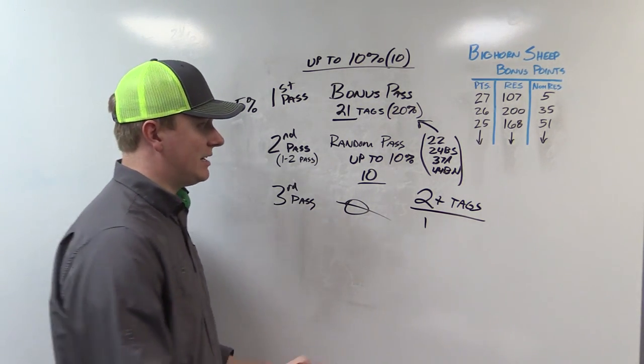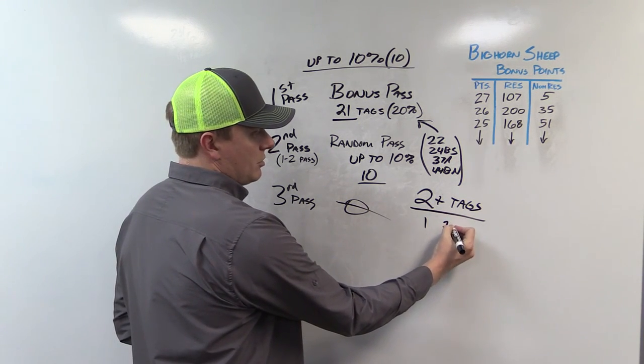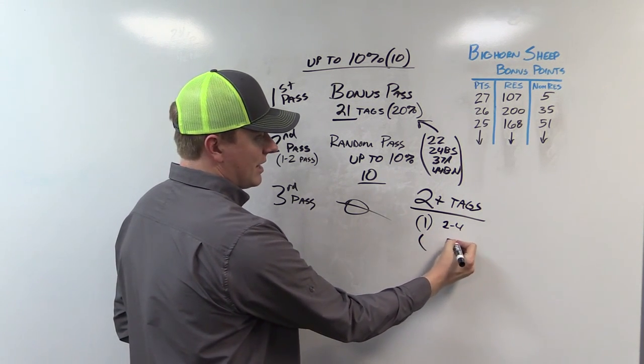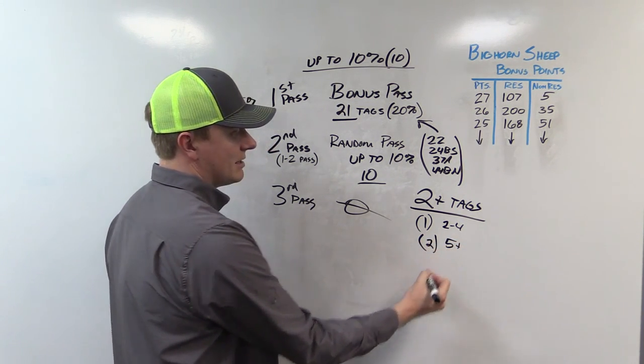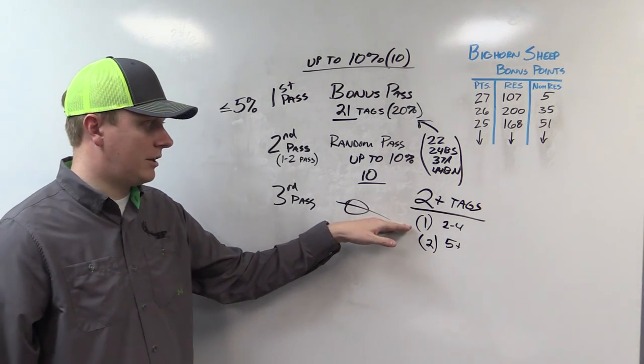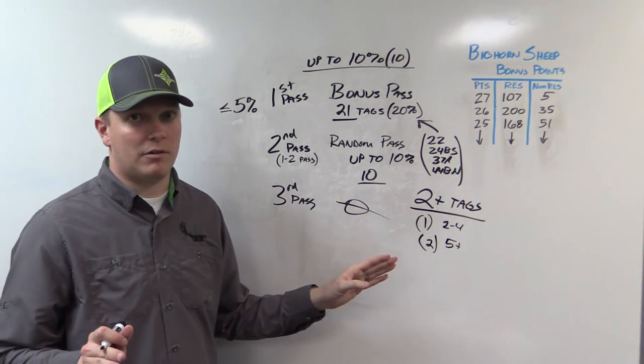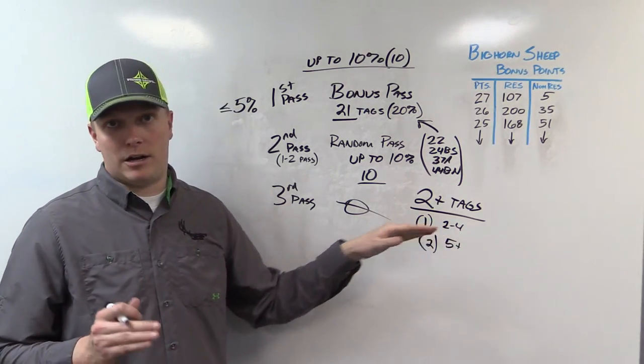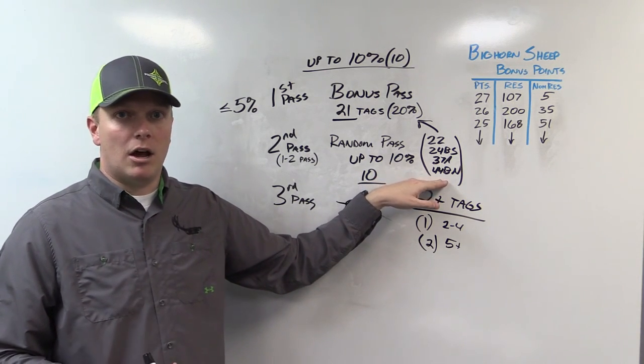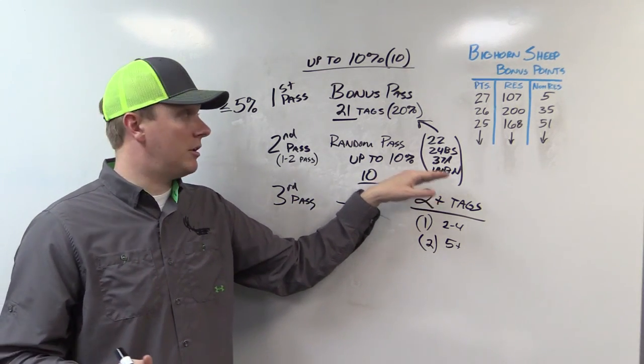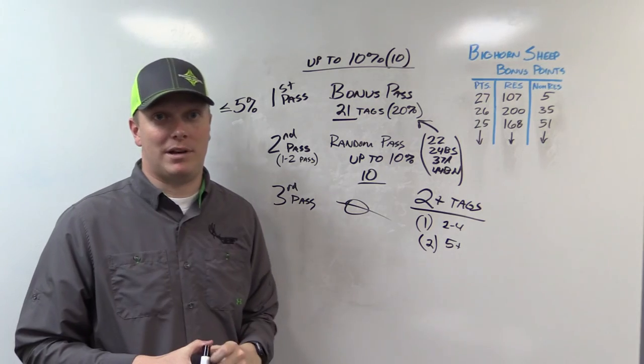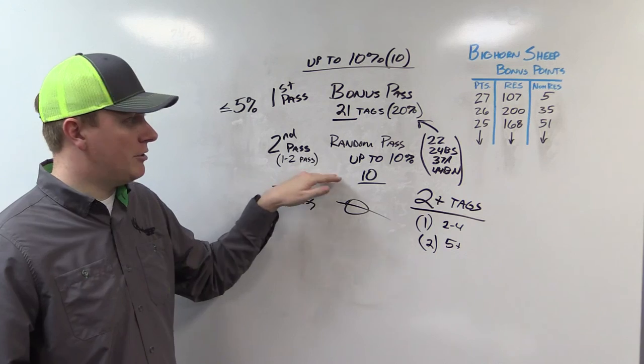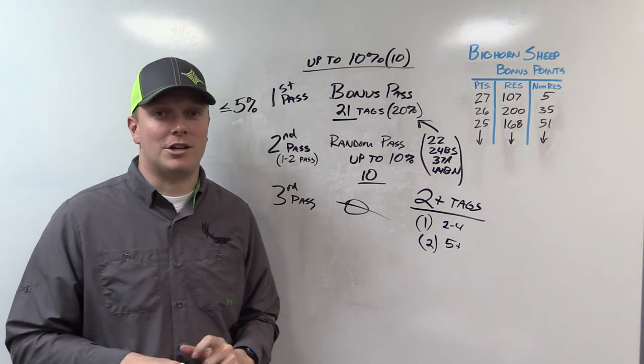We can only take one tag if there's two to four tags total. We can only have one. If there's five plus tags available we can have two tags. That's it. So don't look at the units that only have one tag available. You won't see them covered in our magazine. We only cover hunts that have a chance at a non-resident tag. Don't choose the units that are taken by your max point holders unless you happen to have maximum points. So choose those ones that have multiple tags. You've got a random chance. Hopefully you draw a sheep tag this year.